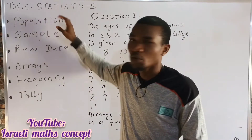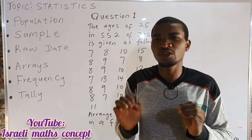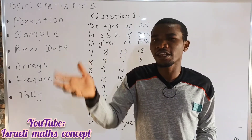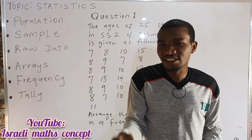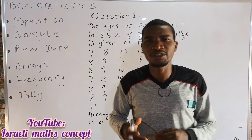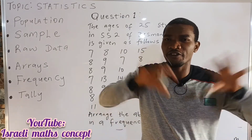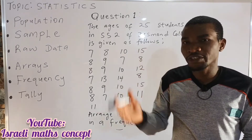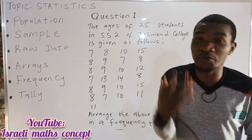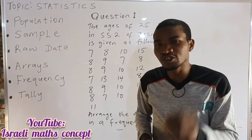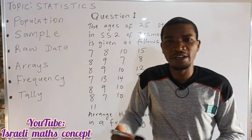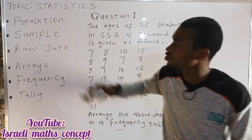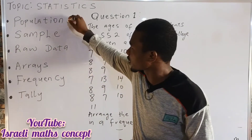Starting with the first one: population. What is population? Population is the totality of the observation that a researcher is concerned about. For instance, if we are trying to study the effect of COVID-19 on the academic performance of students around the globe, globally we have over a hundred countries. During COVID-19, almost all nations experienced some trauma. All the numbers of students scattered around the globe make up your population. So I guess you've learned the concept of population.